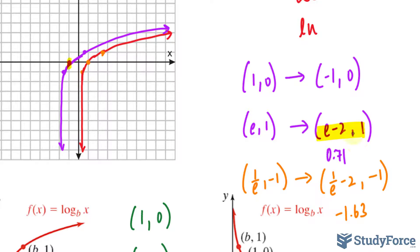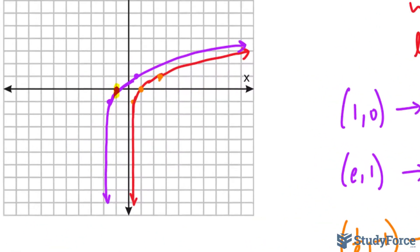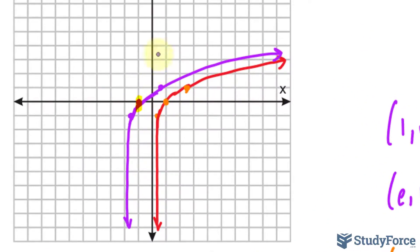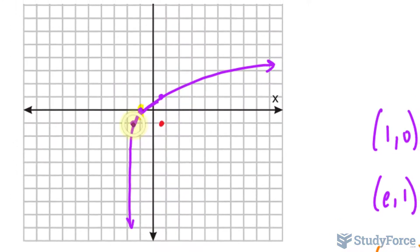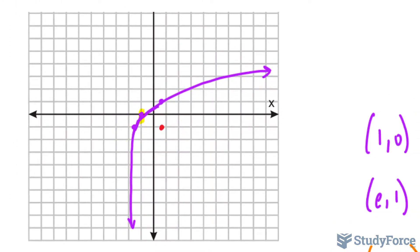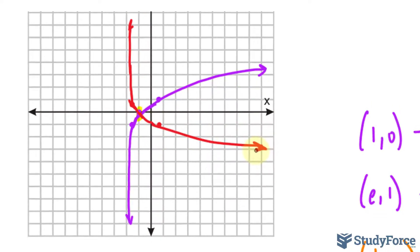This point, on the other hand, will become e minus 2 and negative 1. So rather than being here, it is now somewhere here. Let me erase this red curve so you can see it clearly. So this point becomes down here. And this point, if we reflected about the x-axis, that becomes positive 1, which is right here. This means that our brand new curve will look like this.